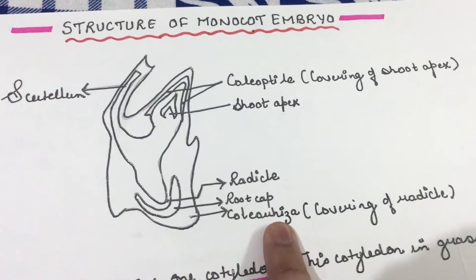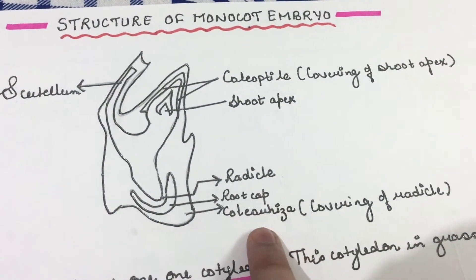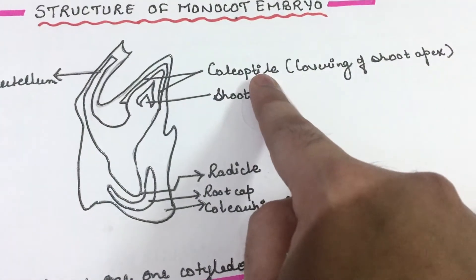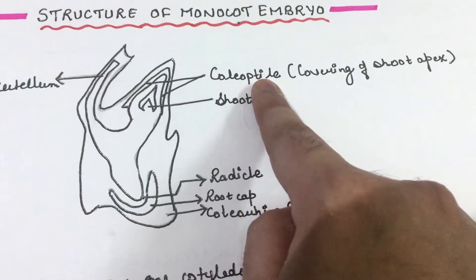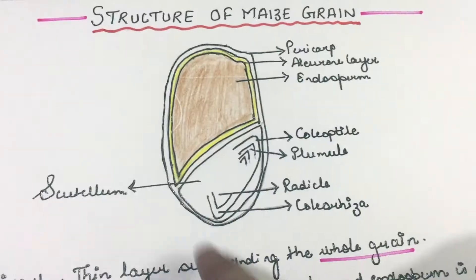So, the covering of the radicle is the coleorhiza and the covering of the shoot apex is the coleoptile.